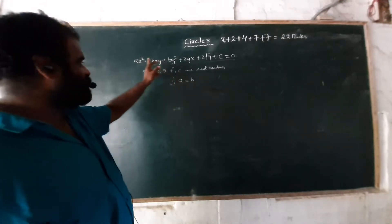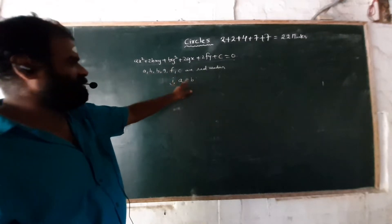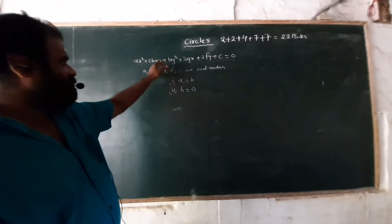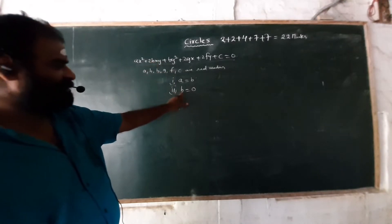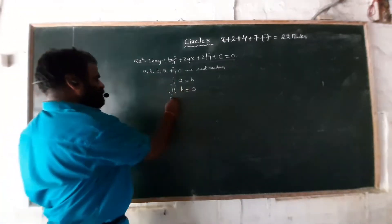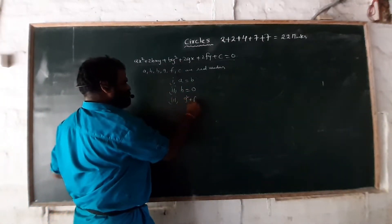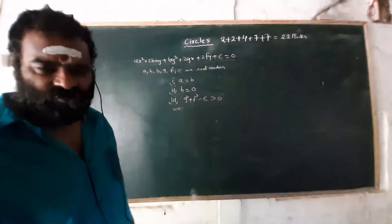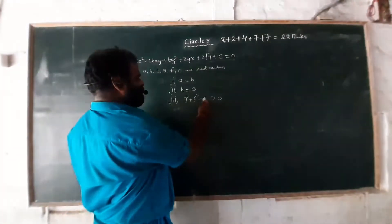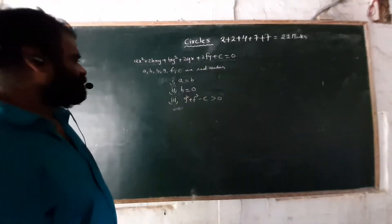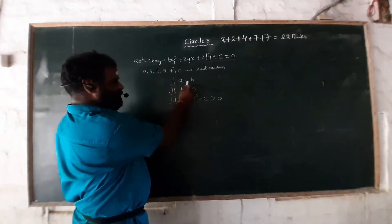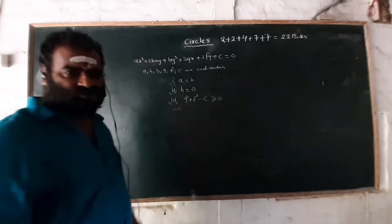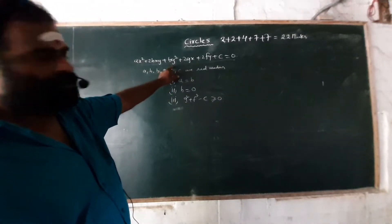What is a and b? The coefficient of x² and the coefficient of y² must be equal. The second condition is h = 0 — the coefficient of xy must be zero. The third condition is g² + f² - c ≥ 0. If all three conditions are satisfied, then the second degree equation represents a circle.